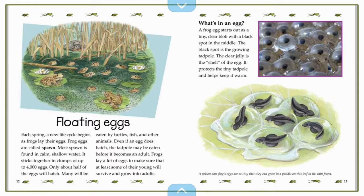Even if an egg does hatch, the tadpole may be eaten before it becomes an adult. Frogs lay a lot of eggs to make sure that at least some of their young will survive and grow into adults. And even that right there is an adaptation. Could you imagine a human mommy pregnant with 4,000 babies? That would be crazy.